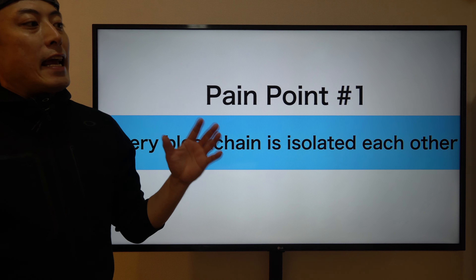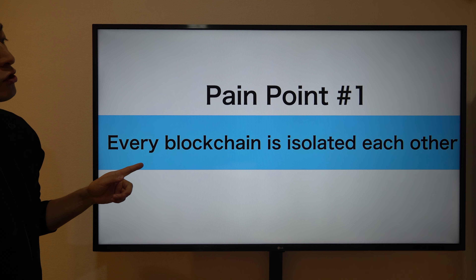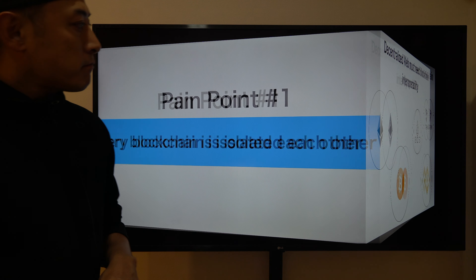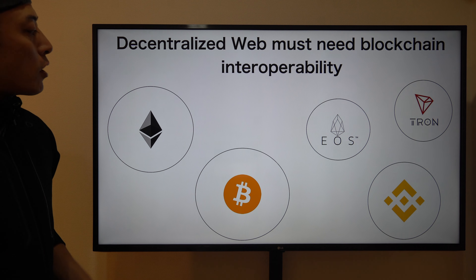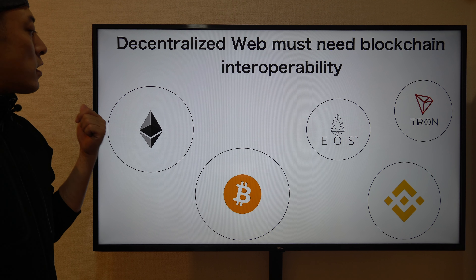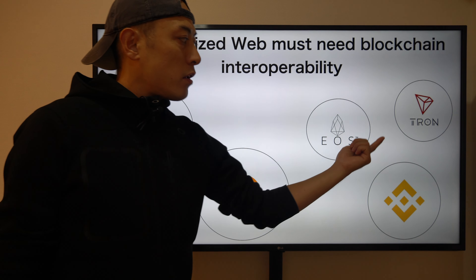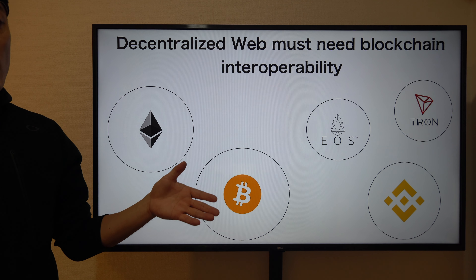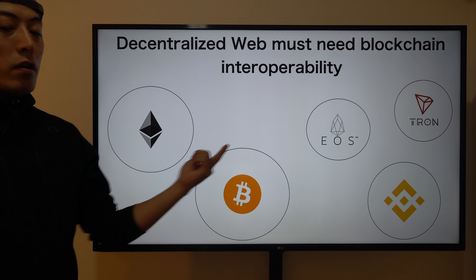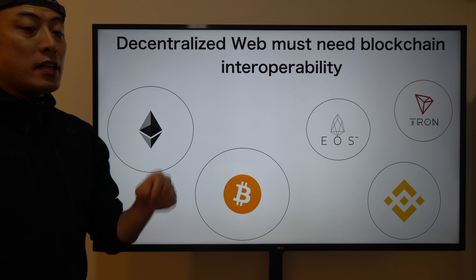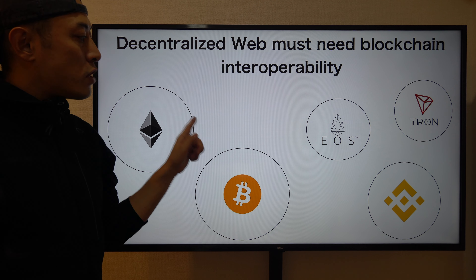For the blockchain interoperability software layer we have mainly two pain points. The first one is that every blockchain is isolated from each other. Each blockchain platform — such as Ethereum, Bitcoin, EOS, Binance, Tron — actually isolates itself. Each blockchain platform doesn't have any way to communicate with the others. Once we want to achieve the decentralized internet, we need technology that can support communication between blockchains.